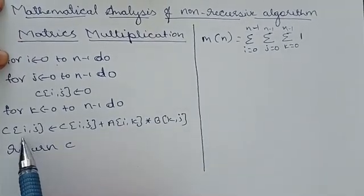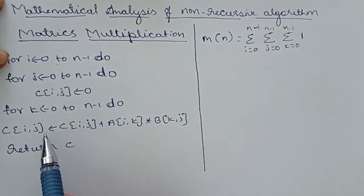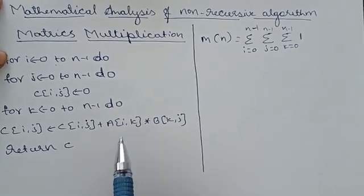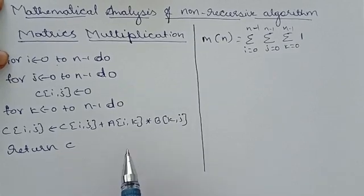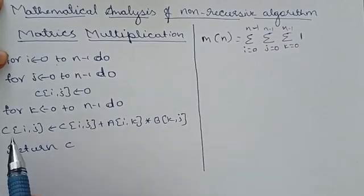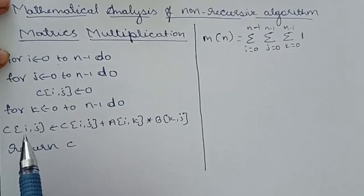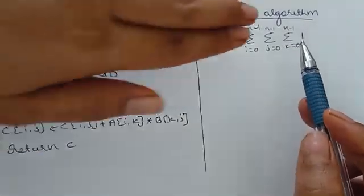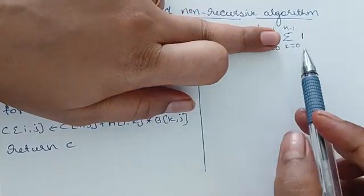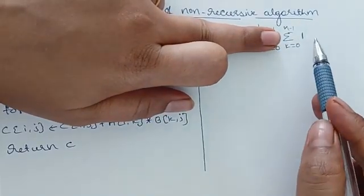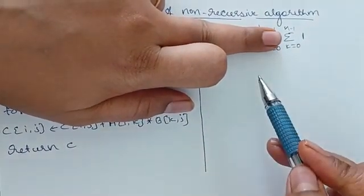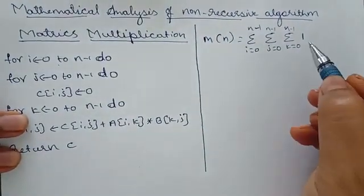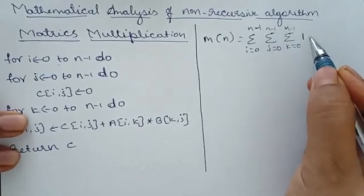The basic operation of this algorithm is: C[i][j] = C[i][j] + A[i][k] × B[k][j] — that is multiplication and then storing the result in the resultant matrix. If we had only one summation, we could solve it directly, but with three summations we must solve from the innermost outward.